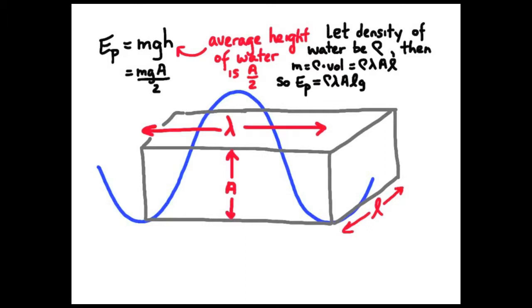So now we have an expression for the stored energy in that water wave of one wavelength, and it's in gravitational potential energy form, and it's equal to 1 half rho, the density of water, lambda A squared L times G.